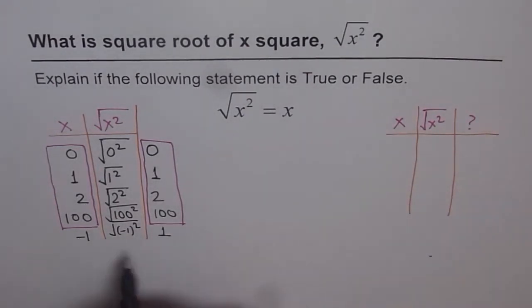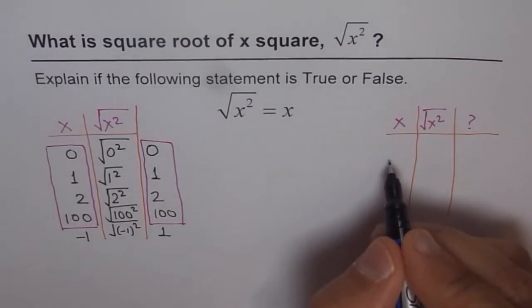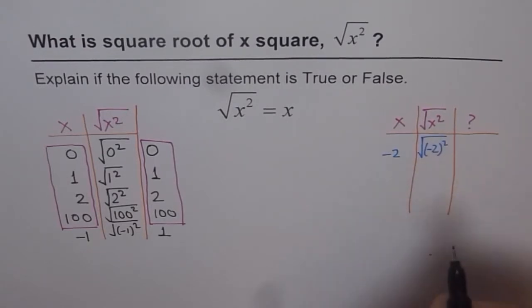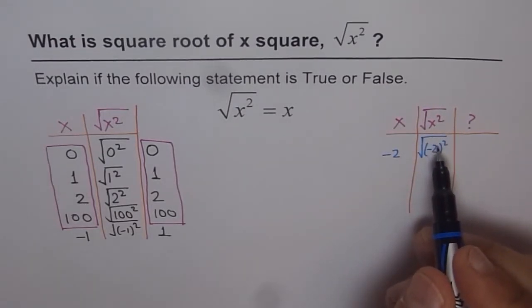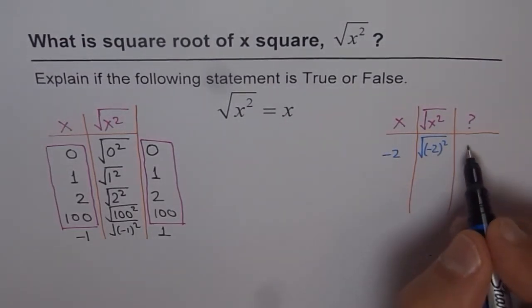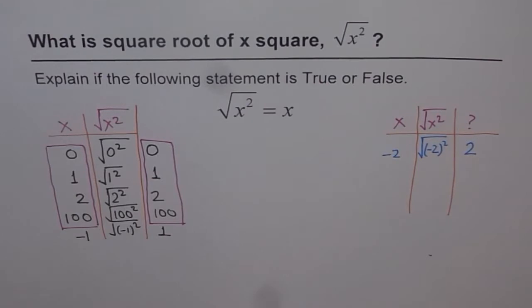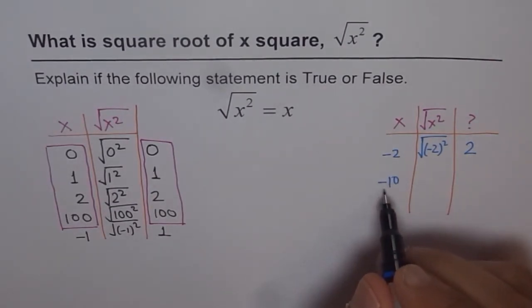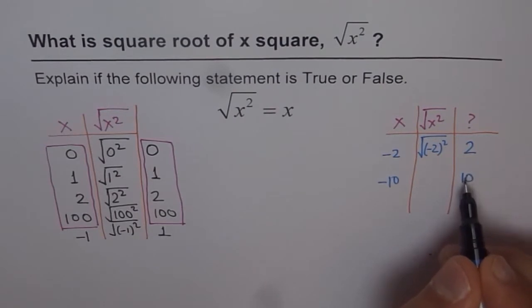So let me put a negative number now because 1 didn't work. If I put x as negative 2, then I have square root of negative 2 square. Now, negative 2 square is 4 and it returns me a value 2. I do not get minus 2, but I'm getting 2. How about minus 10? So if I do minus 10 square, I get 100 and square root of 100 will be 10. So again, what I get here is not x.